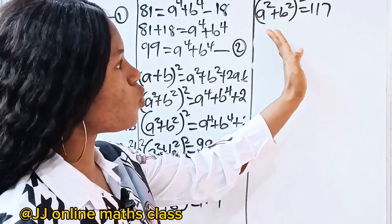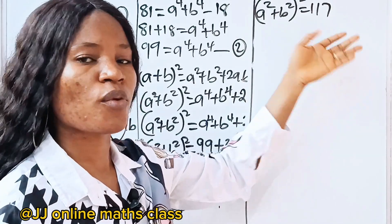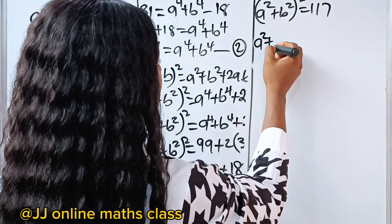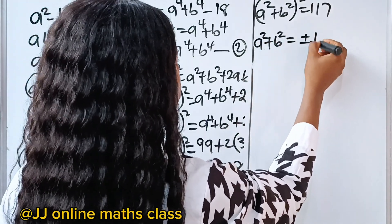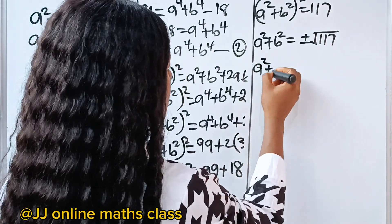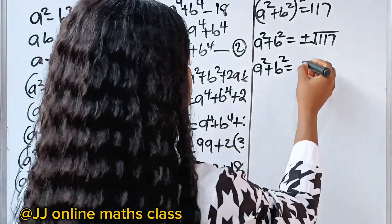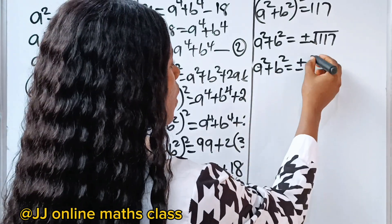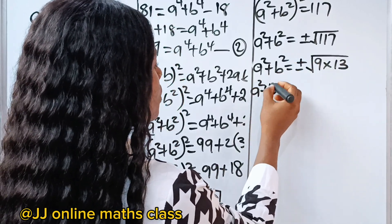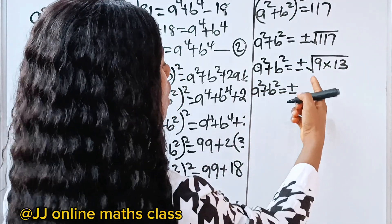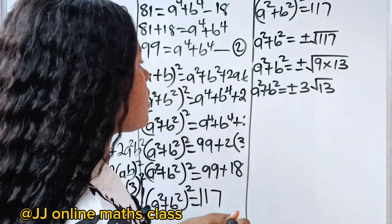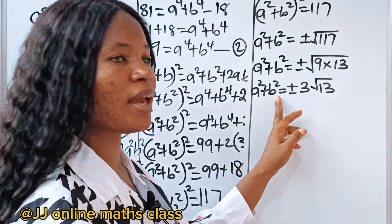Now let's take the square root of both sides of this equation. If we do that, we have square root of (a squared plus b squared) squared, which gives us a squared plus b squared, is going to be equal to plus or minus square root of 117. So a squared plus b squared is equal to plus or minus square root of 9 times 13, which gives us plus or minus 3 root 13.